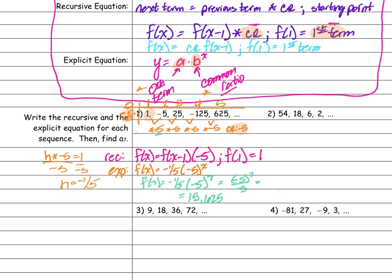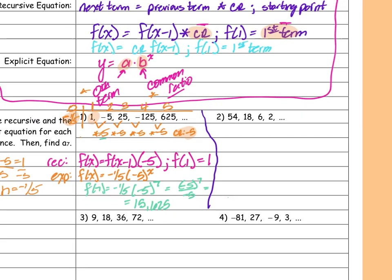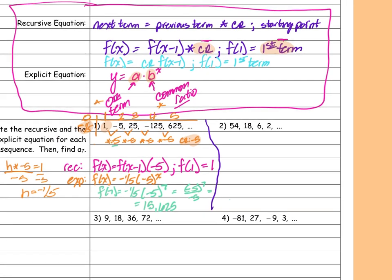Now we're going to try the next one — exactly the same thing. What did I do to get from 54 to 18, 18 to 6, 6 to 2?